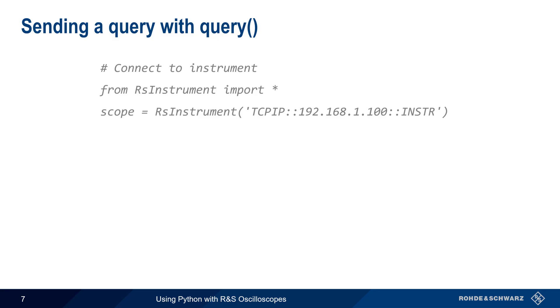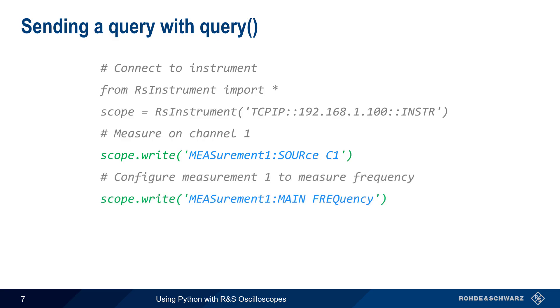Now let's look at sending a query and receiving a response. We start by sending two commands to the scope. The first says that the source of the measurement is channel 1, and the second says that we want to measure frequency. In both cases, we use write() because we don't need or expect a response. But we use query() when we ask the scope to return the measured frequency. Note that SCPI commands associated with queries usually end in a question mark.